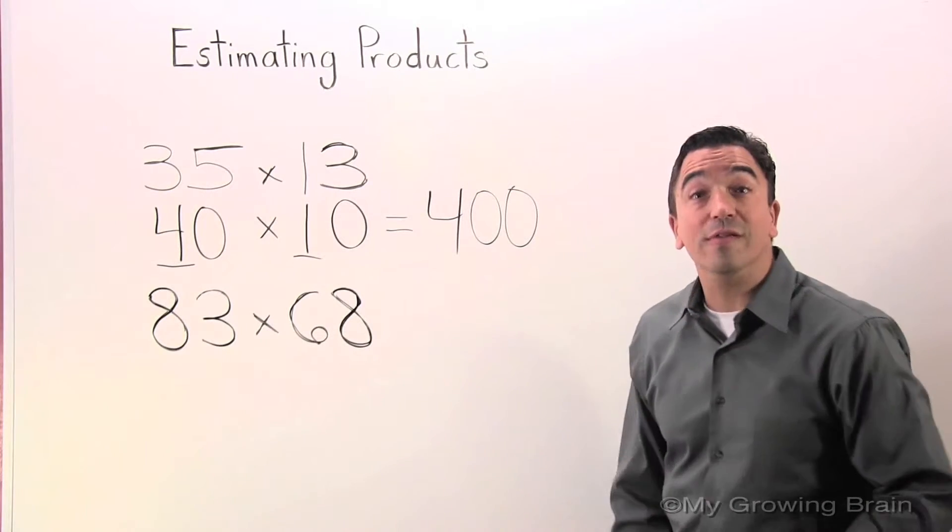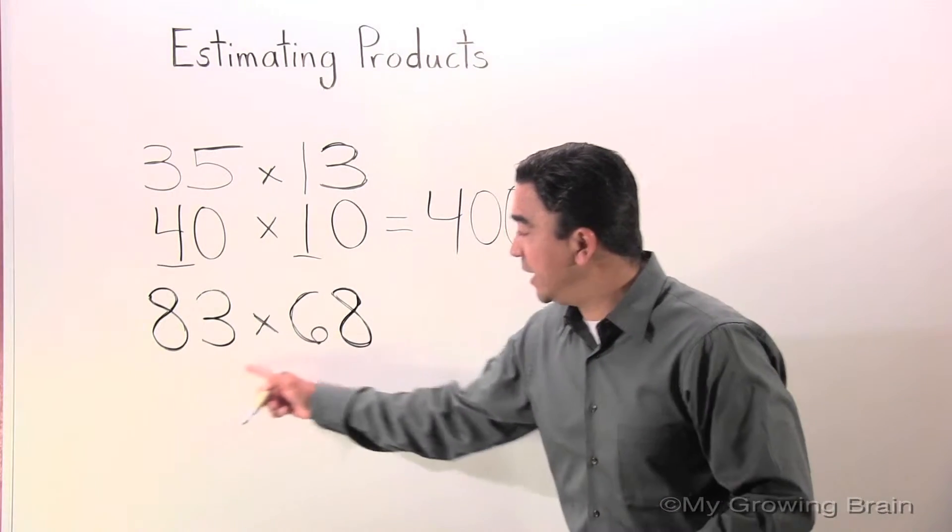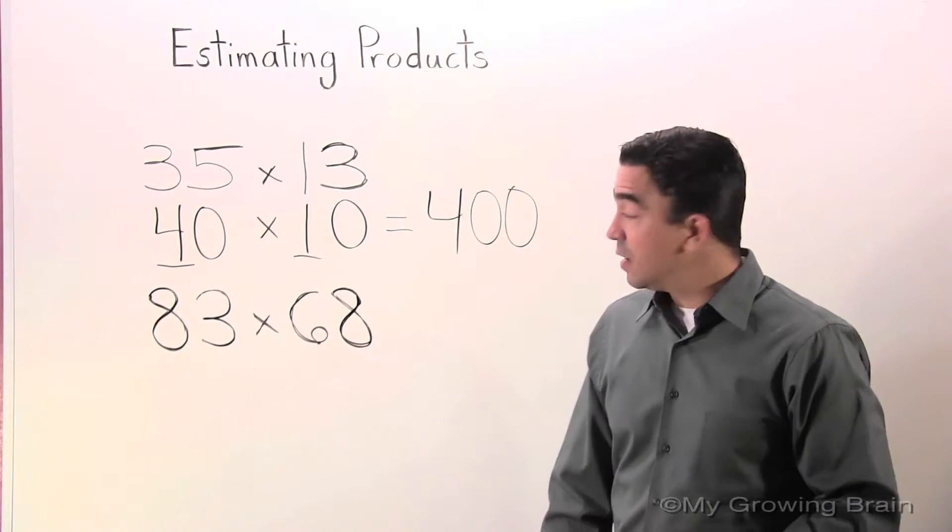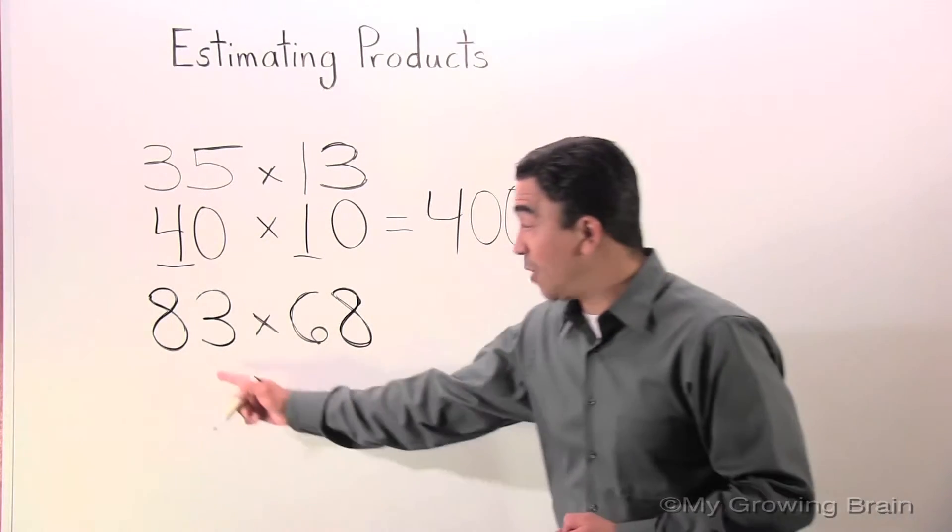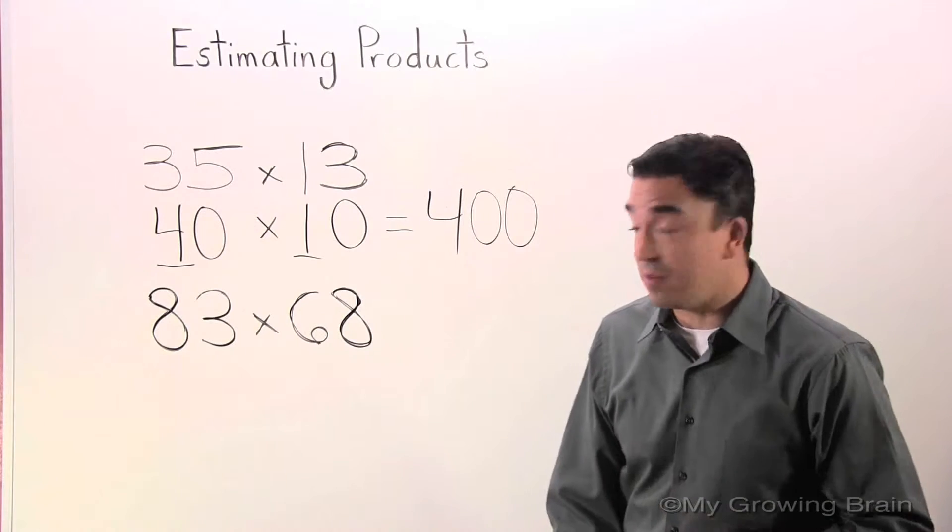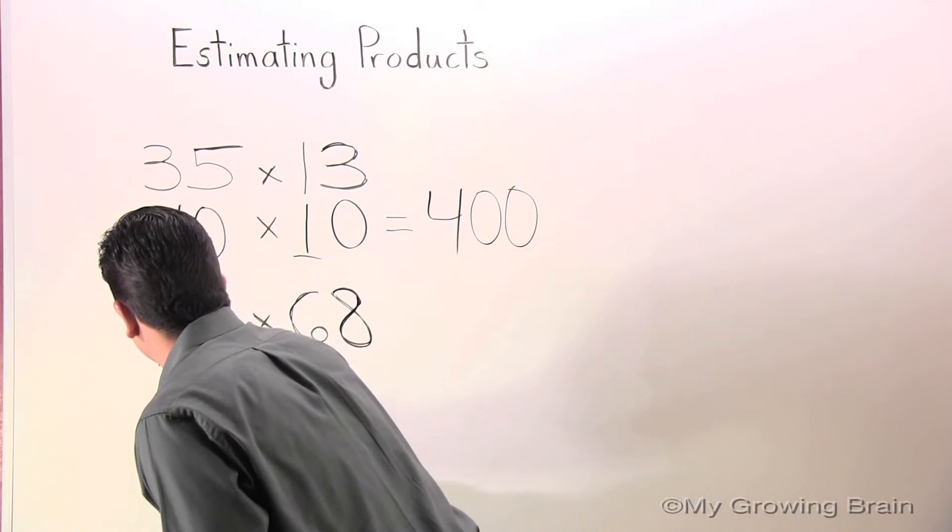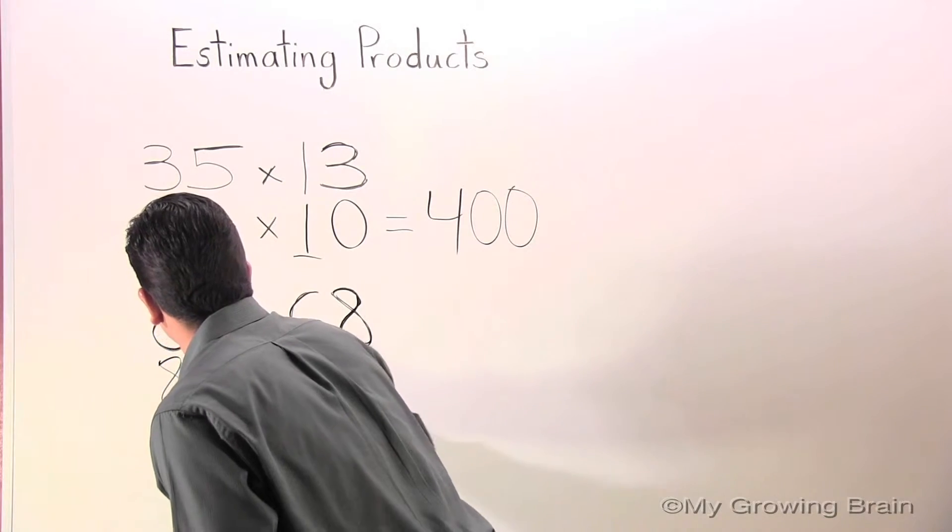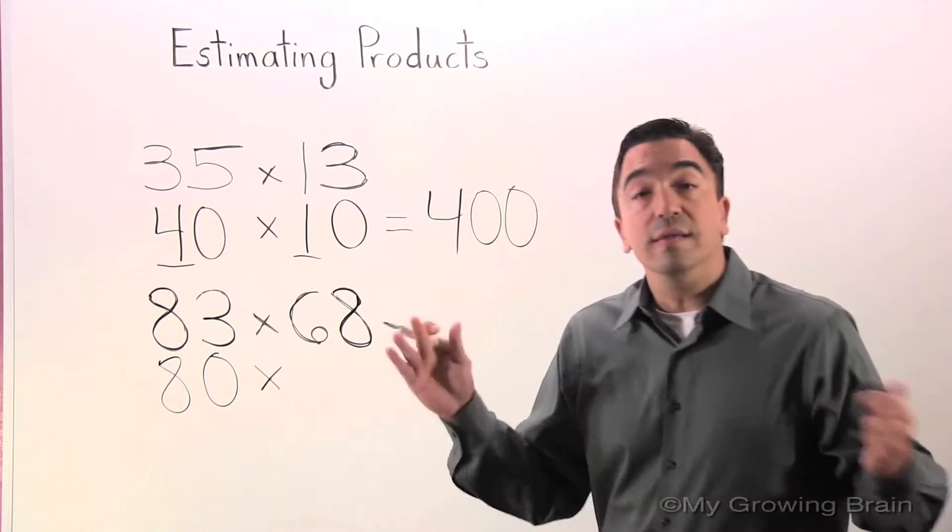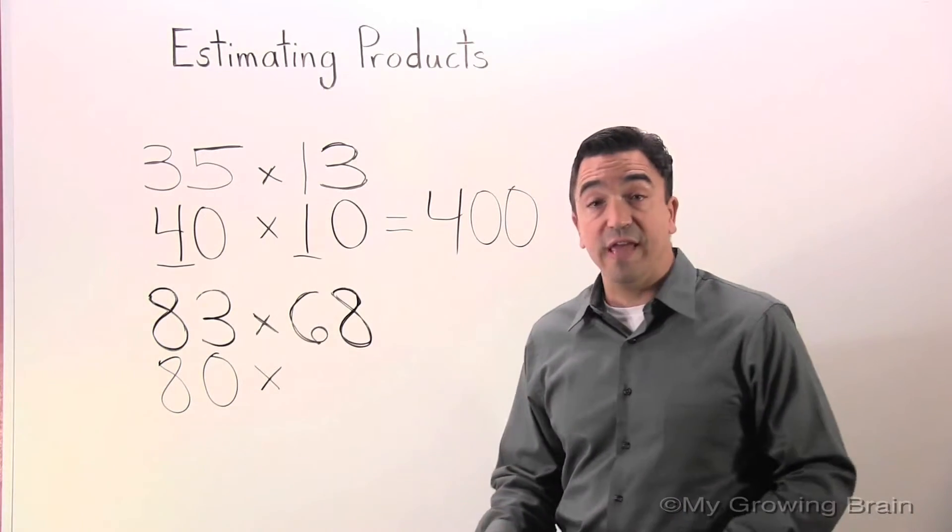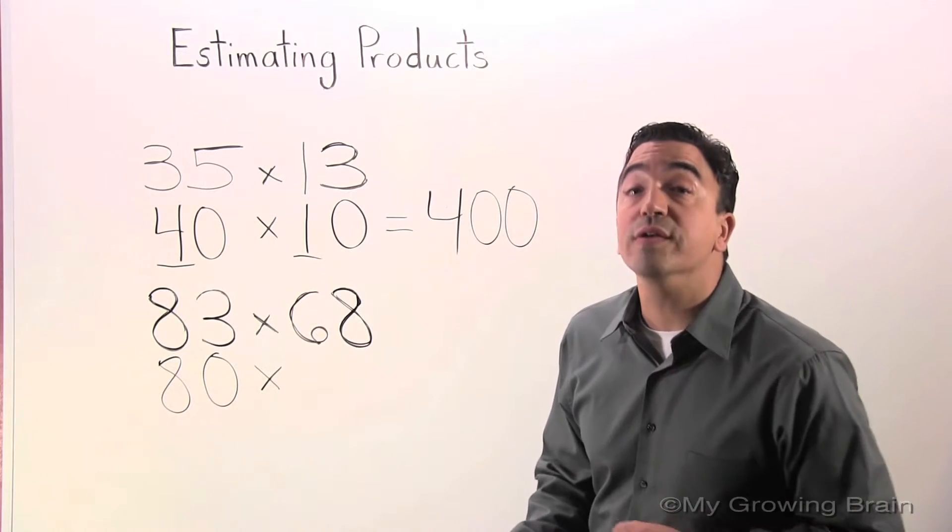Let's go to the second problem. We have 83 times 68. The first thing I'm going to do is round 83 to the nearest 10, which is 80. Now I'm going to round 68 to the nearest 10, which is 70.